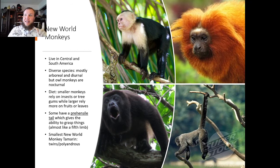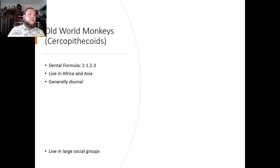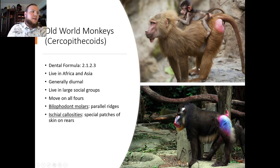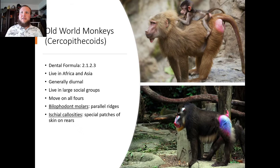The smallest new world monkey is the tamarin, which has twins instead of just one offspring and is polyandrous — meaning their group consists of one female and multiple males, which is interesting and one of the few species that does that. Old World monkeys — catarrhines — inhabit Africa or Asia. They have narrow noses with nostrils facing downward and a narrow septum, and two premolars in each quadrant — a 2-1-2-3 dental pattern. This shows we're more related to old world primates than new world primates. They also have bilophodont molars with parallel ridges, and ischial callosities — special patches of skin on the rear — which allow them to sit easier and also signify reproductive status. Most have tails; apes do not.